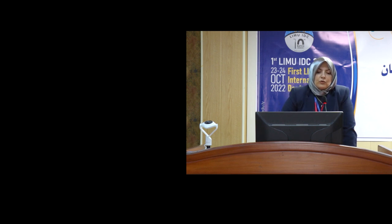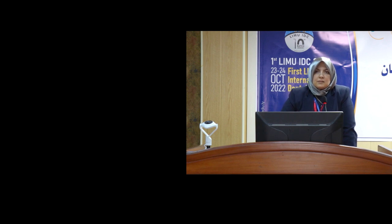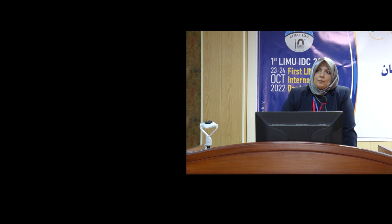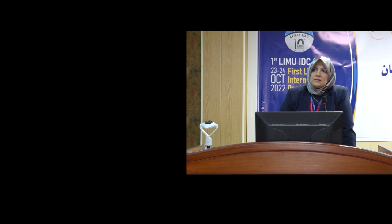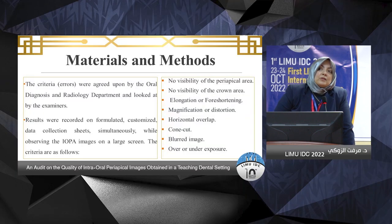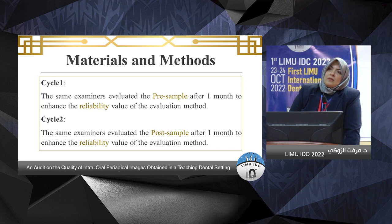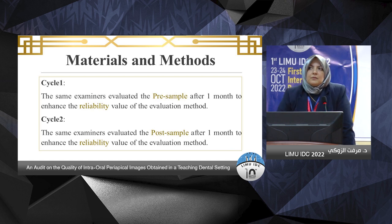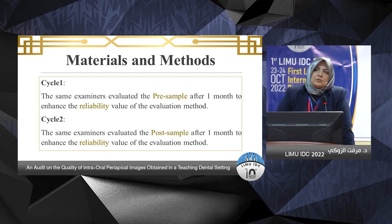We were looking for positioning errors, recorded on a customized data collection sheet while observing images on a large screen. The criteria included: no visibility of the periapical area, no visibility of the crown area, elongation or foreshortening (vertical angulation errors), magnification or distortion, horizontal overlap, cone cut, blurred image, and over or under exposure. As images were obtained digitally, there were no processing errors. The same examiners evaluated the pre-sample after one month to enhance reliability, and the same was done for the post-sample in cycle two.